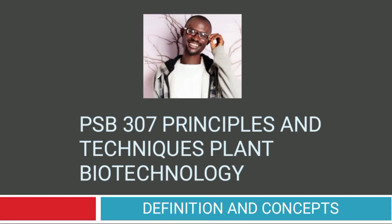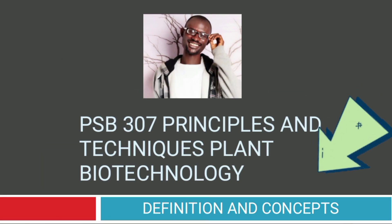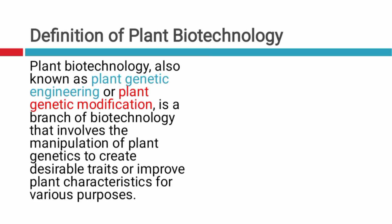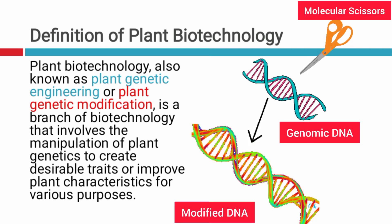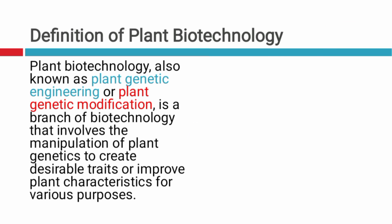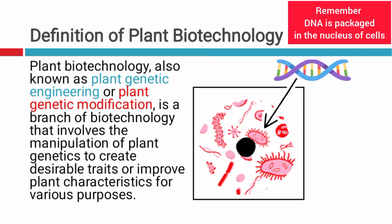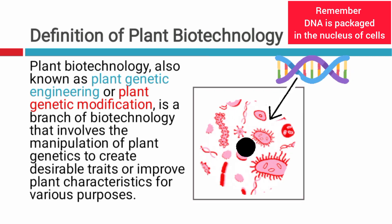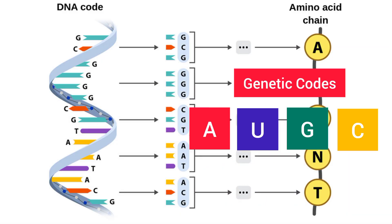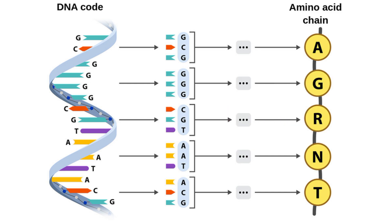This is PSB 307: Principles and Techniques in Plant Biotechnology. Our first topic is the definition and concepts you need to familiarize yourself with. When we say plant biotechnology, we are talking about manipulating the DNA in plants. You already have an idea from your BIO 211 class about what genetics is — the genes, the DNA, and the chromosome. We already know that they are like the codes that govern life processes.